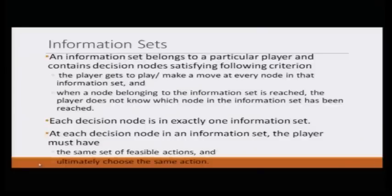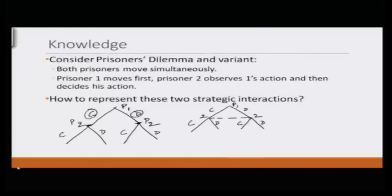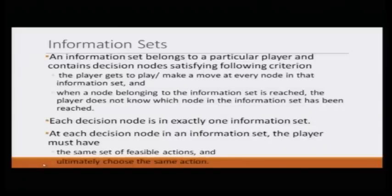The distinction is about the level of knowledge. In the first variant, prisoner 2 knows prisoner 1 has taken action C or D. In the original game, prisoner 2 only knows prisoner 1 has taken one of the actions but does not know which. This is modeled using an information set.